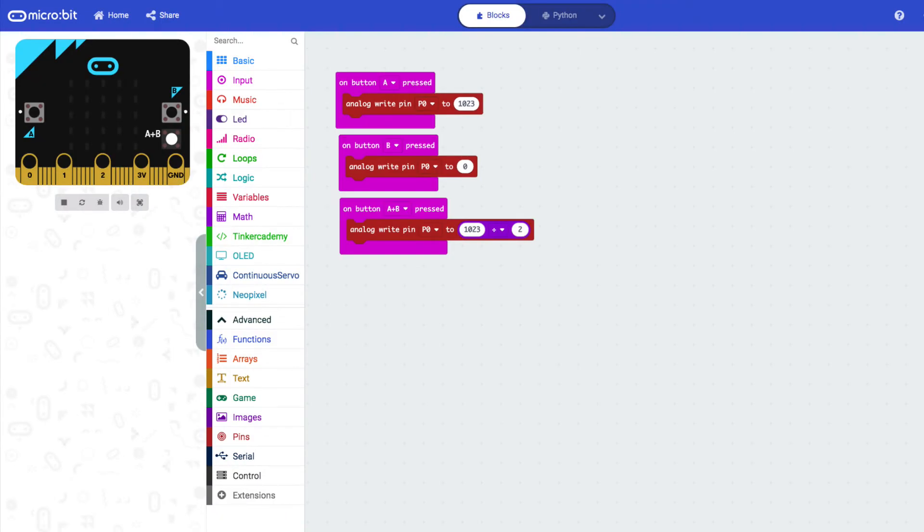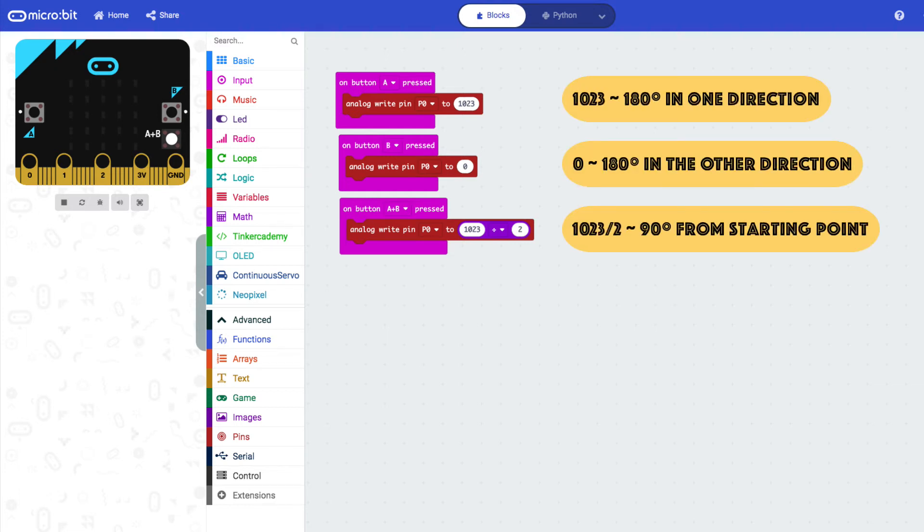Alternatively, you can use the analog write pin block found in the same drawer, though this is less intuitive. Sending an analog signal between 0 and 1023 from our micro bit is the same as telling the servo to vary its rotation between 0 and 180 degrees.